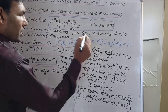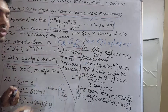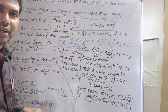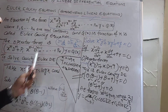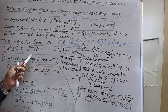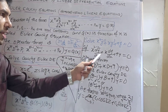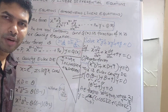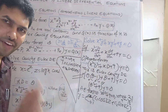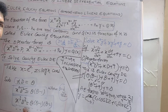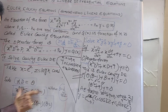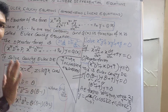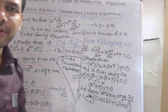This is important for short answer problems. As a recap: x = e^z, z = log(x), xD = θ, x²D² = θ(θ−1), x³D³ = θ(θ−1)(θ−2). Keep these formulas in mind to quickly solve any Cauchy-Euler differential equation.